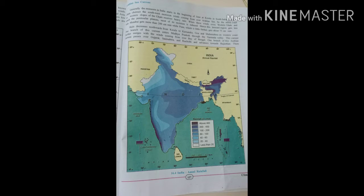Hence the leeward region gets less rainfall. Mumbai gets 200 centimeter rainfall but Pune gets very less rainfall. Rain decreases northwards from Kerala to Karnataka, Goa, and Maharashtra on the western coast.